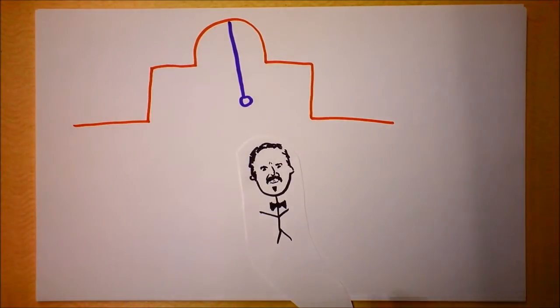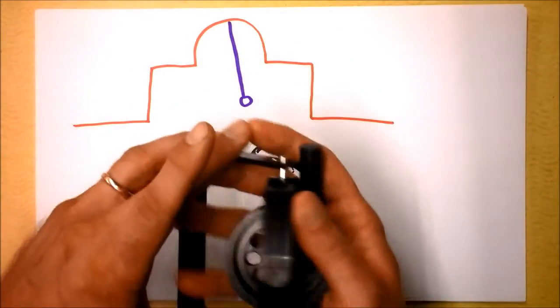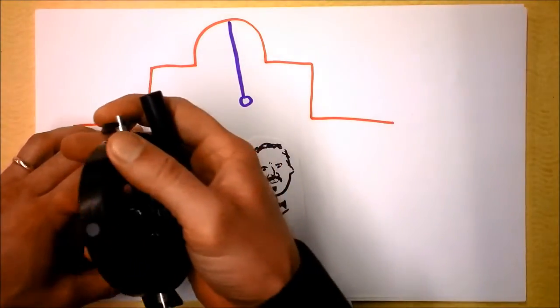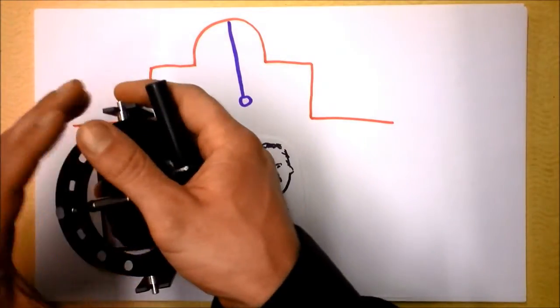He realized that the gyroscope, this thing right here, could be used to show the rotation of the earth much more simply the next year. He realized the gyroscope would work the next year to show the rotation of the earth.